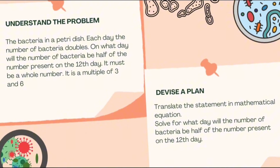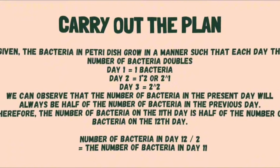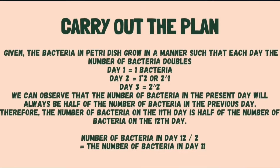As we do in our day-to-day lives, to solve our problems, we must first understand them. Here in our first mathematical problem, the bacteria is in a petri dish and each day the number of bacteria doubles. On what day will the number of bacteria be half of the number present on the twelfth day? It must be a whole number and it is a multiple of three and six. Now that we've understood the problem, we must devise a plan to solve it. We can translate the statement into a mathematical equation and solve for what day the number of bacteria will be half of the number present on the twelfth day. Now we must implement the plan.